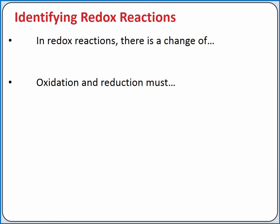Oxidation and reduction must occur together, because if one species loses electrons, another species must gain electrons. We can also refer to the oxidizing agent or reducing agent. The oxidizing agent is the reactant containing the element that undergoes reduction. Since oxidation and reduction must occur together, if an element undergoes reduction, it causes something else to undergo oxidation. So when we add the word 'agent,' it means the species is causing that process in something else. Likewise, the reducing agent causes reduction in something else by itself undergoing oxidation. So the reducing agent is the reactant containing the element that undergoes oxidation.